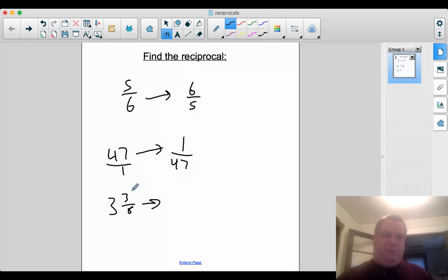For a mixed number, these are the only ones that really require any work here. These we got to turn into an improper fraction first. So remember how to do that? 3 times 8 is 24 plus 3 is 27. So I get 27/8. And then I can flip it upside down and get 8/27.